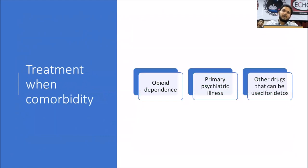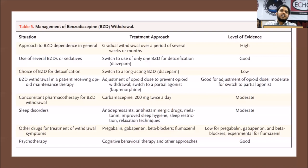With buprenorphine, the risk of respiratory depression or overdose is lower. For comorbid psychiatric illness — for example, a patient with schizophrenia using 2 mg of clonazepam — whether to taper or not presents a clinical dilemma. Alternative options should always be considered, though this is not always possible.